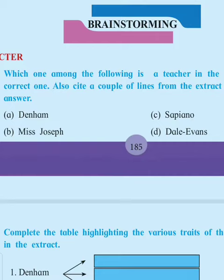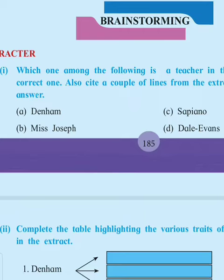Which options are given here? Denham, Miss Joseph, Sapiano, Dale-Evans. If you observe and read the given information in your textbook, you'll see it has been observed that Denham, Miss Joseph, and Sapiano are students.